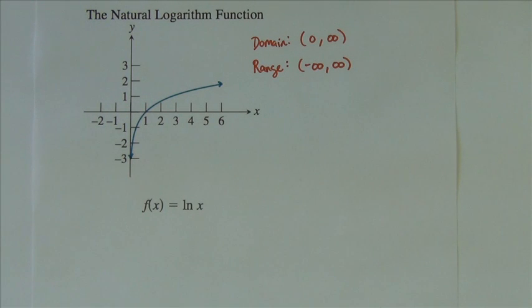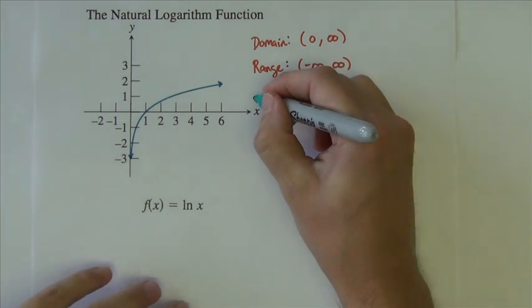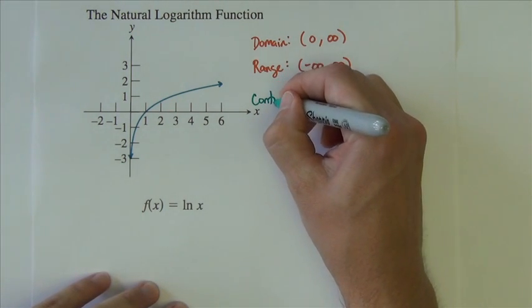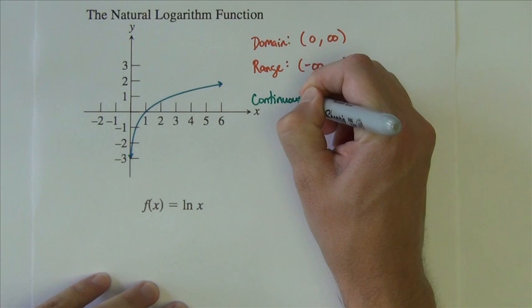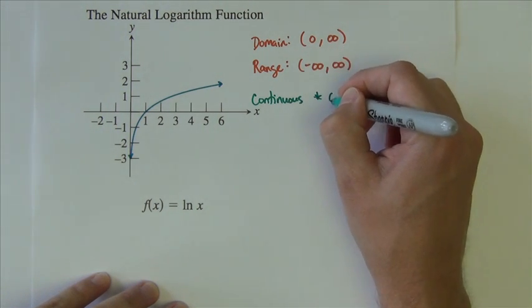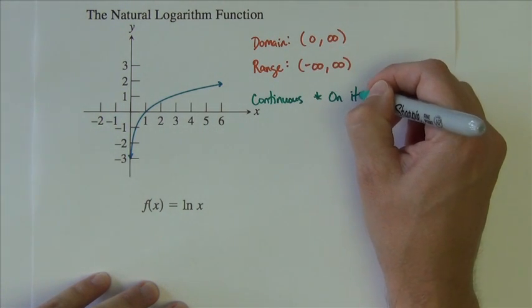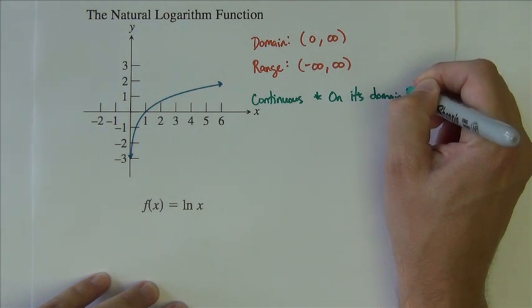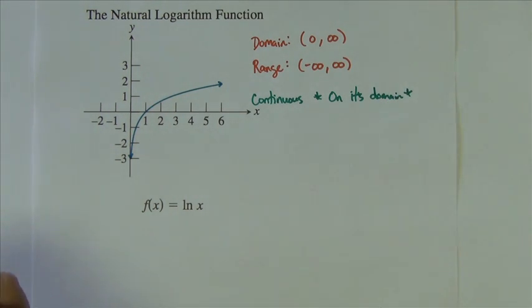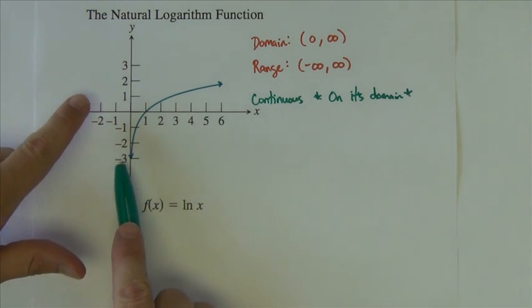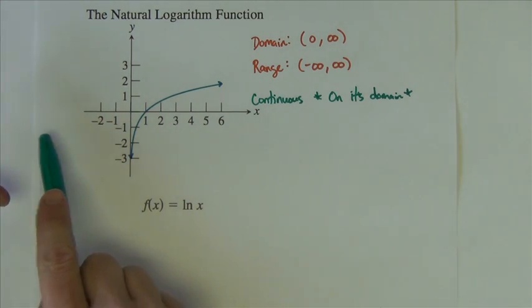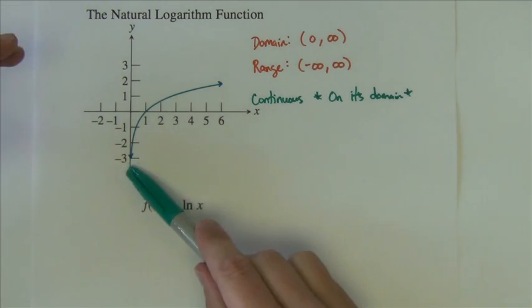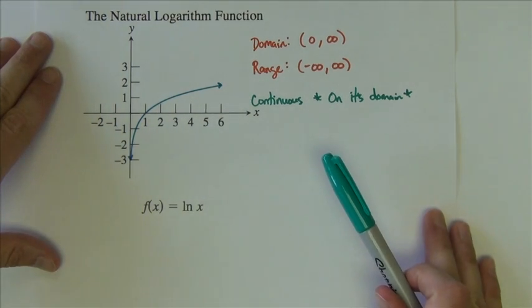It is continuous. I'm going to add, as we've seen in the past, on its domain it's continuous. It's not continuous at 0 or at negative 1, negative 2, negative 3. It's not continuous out here, but where it is drawn, it is continuous.